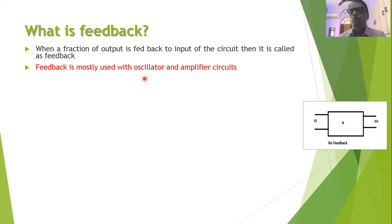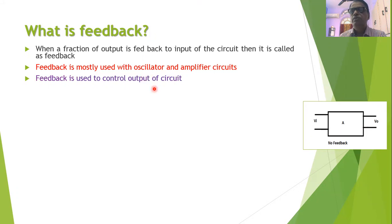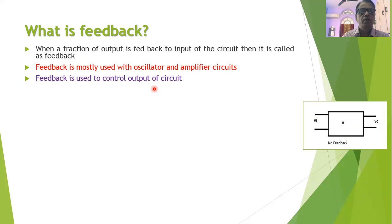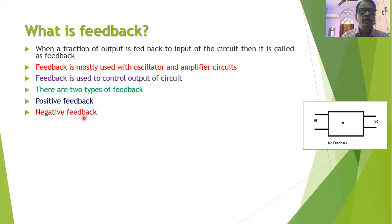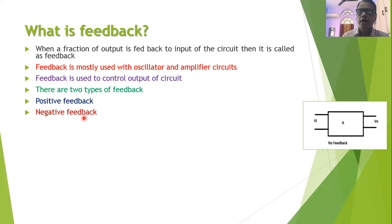Feedback is mostly used with oscillator circuits and it is also used with amplifier circuits. Feedback is normally used with electronic circuits because with the help of feedback, it is possible to control the output of the circuit. There are two types of feedback commonly used in electronic circuits: the first is called positive feedback, and the second is called negative feedback.